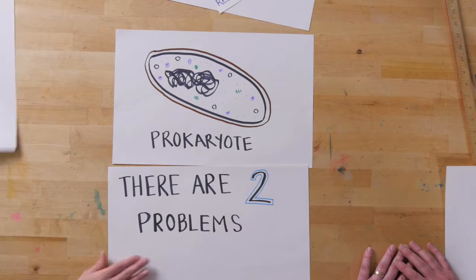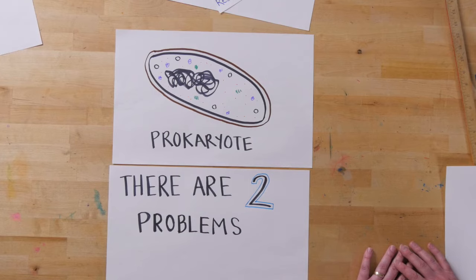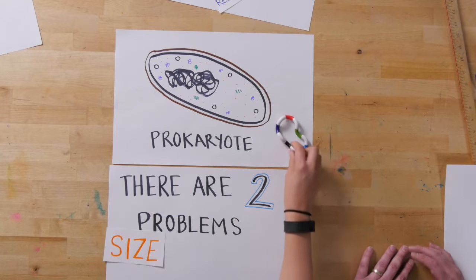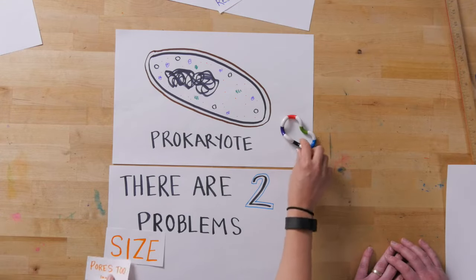There are two specific problems with the plasmid getting in. One of them is actually size. The plasmid is way big compared to the holes in the membrane. It can't get through. So the pores are too small.